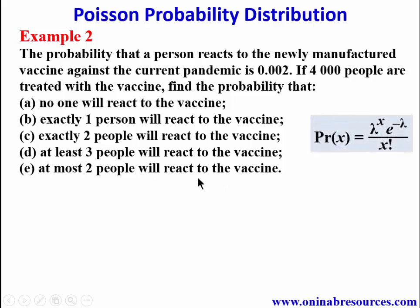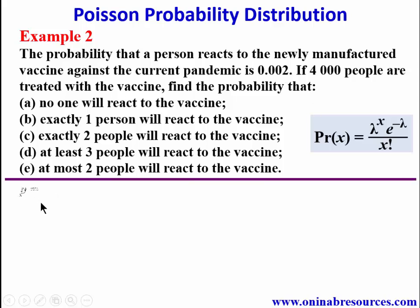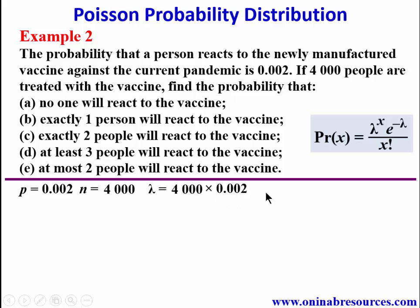First we identify the parameters: the total population n = 4,000 and the probability of success p = 0.002. Therefore lambda = np = 4,000 × 0.002 = 8. The value of x will depend on the number of people reacting to the vaccine for each part.